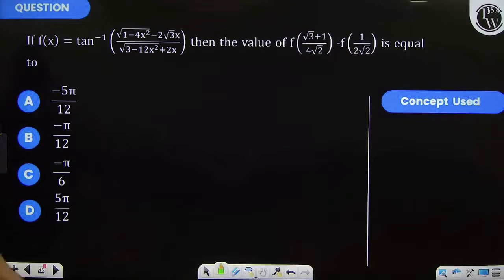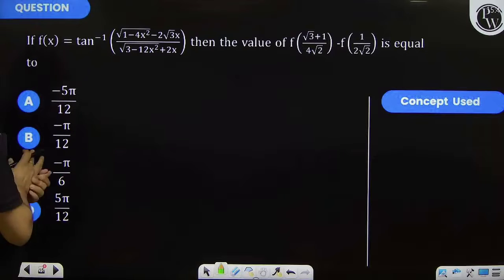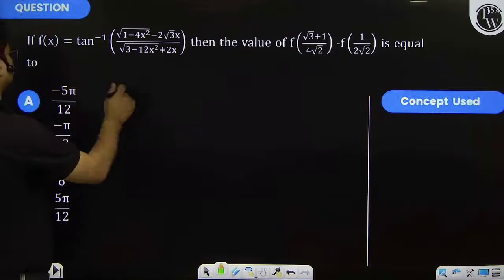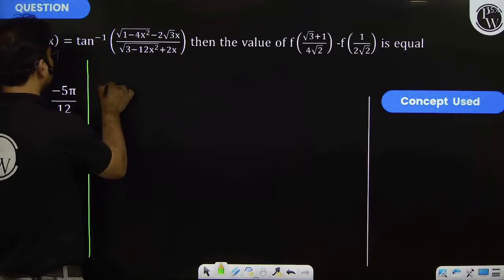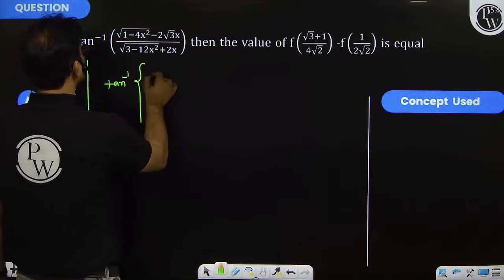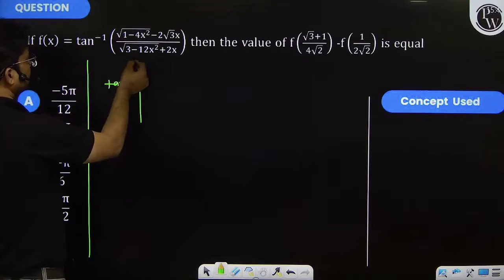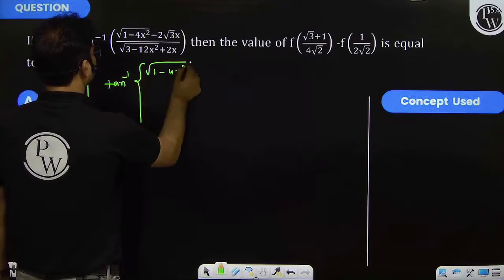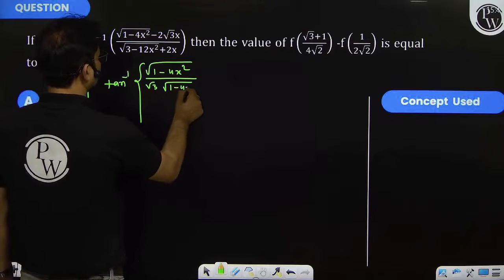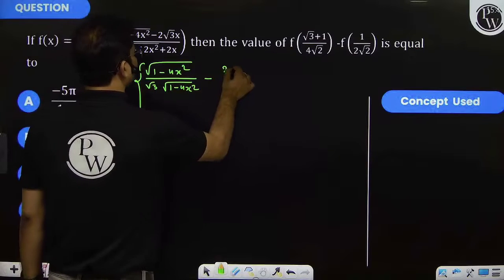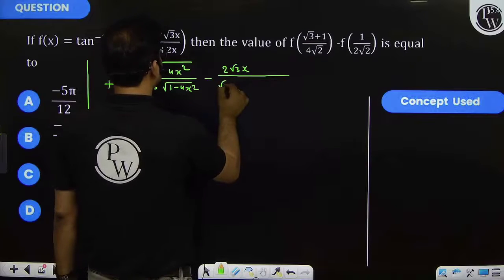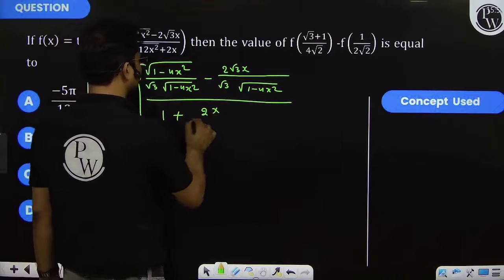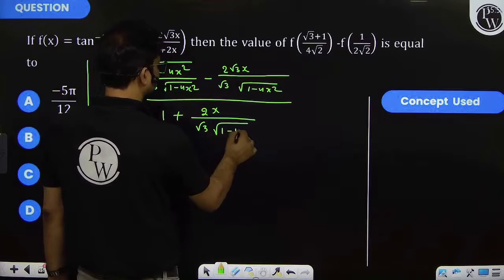Next problem: if f(x) is equal to tan inverse of root(1 - 4x²) divided by 2√3·x. First of all, we will take tan inverse by dividing from (3 - 12x²)(1 - 4x²) under root, divided by √3·√(1 - 4x²) minus 2√3·x divided by √3·√(1 - 4x²).